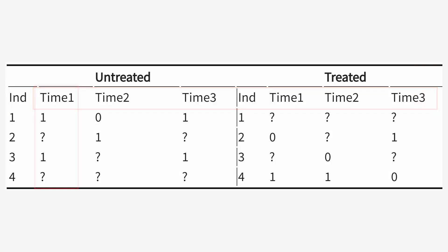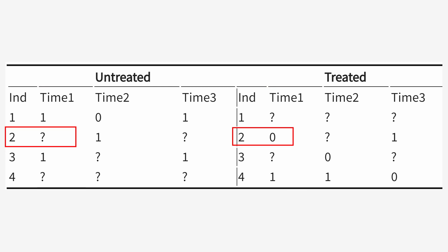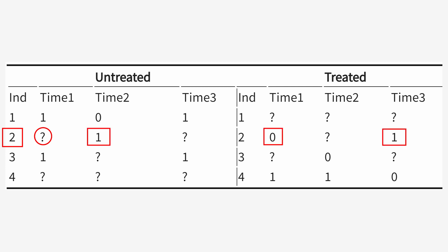It goes iteratively, using regularized regression — a machine learning tool — to try to make those predictions. First it looks at a time variable: I'm trying to predict a value in time period one, so I'm going to use the other data from time period one to try to predict what person two would have been if they had also been untreated. Then it goes the other way: I know a lot about individual two, and I can try to predict what this question mark would be based on individual two's data in other periods. It goes back and forth, making its best prediction for what individual two would have seen if they had been untreated in time period one. And that's the basics of matrix completion.